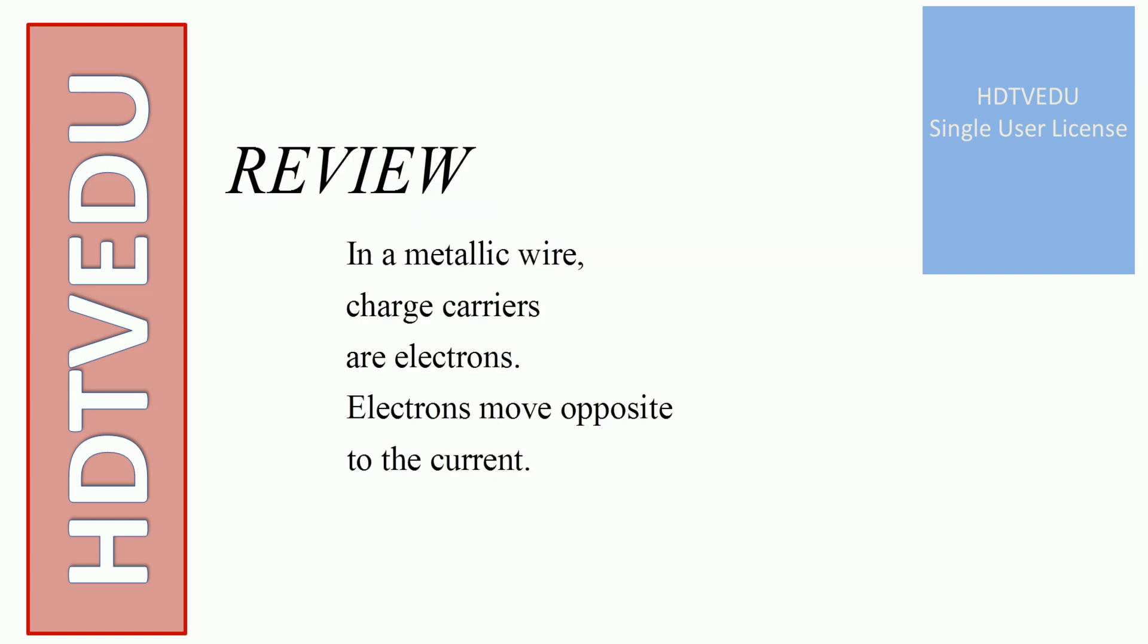Now in a metallic wire, we know that charge carriers are electrons. And what do electrons do? Electrons move opposite to the current.